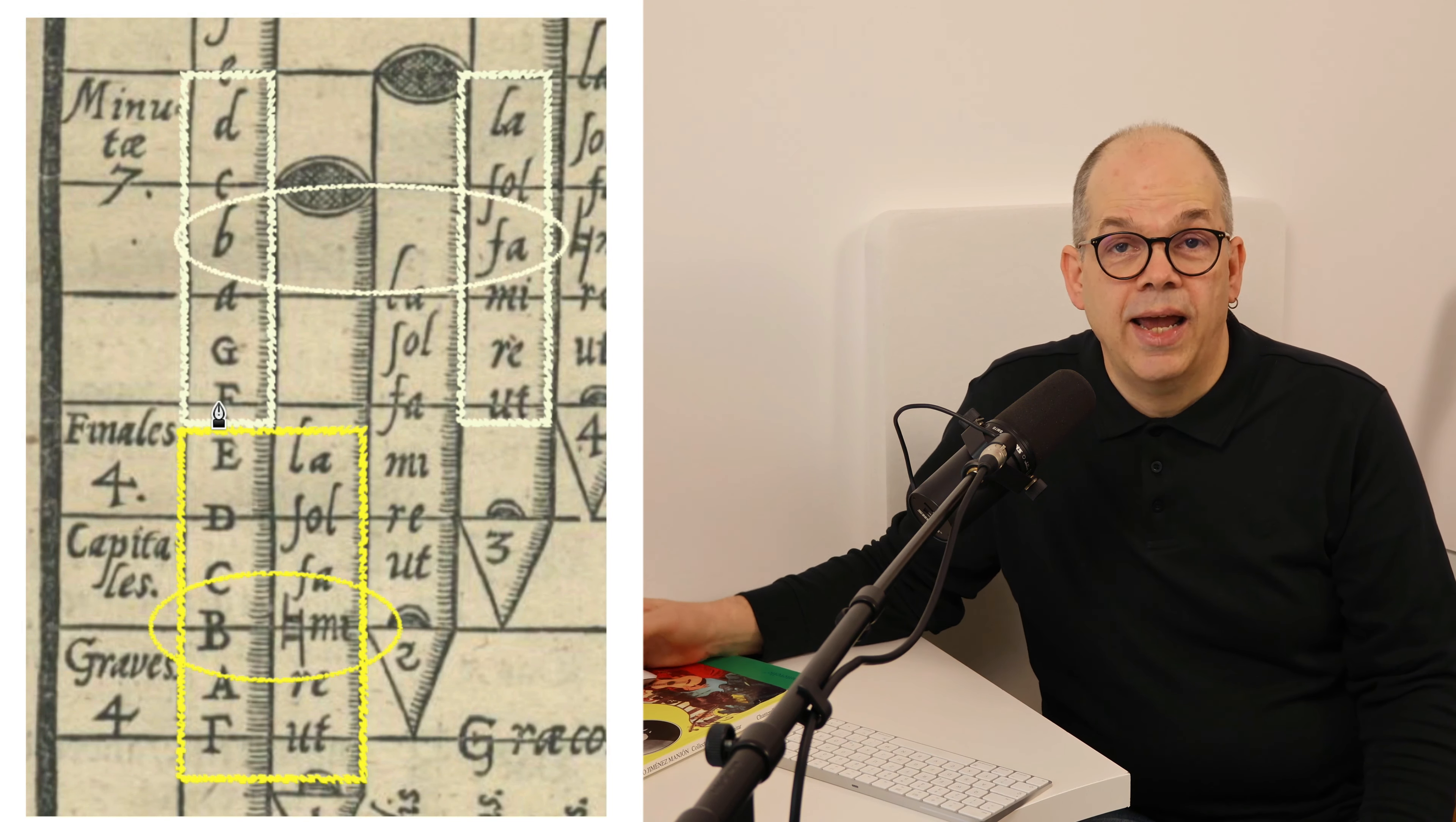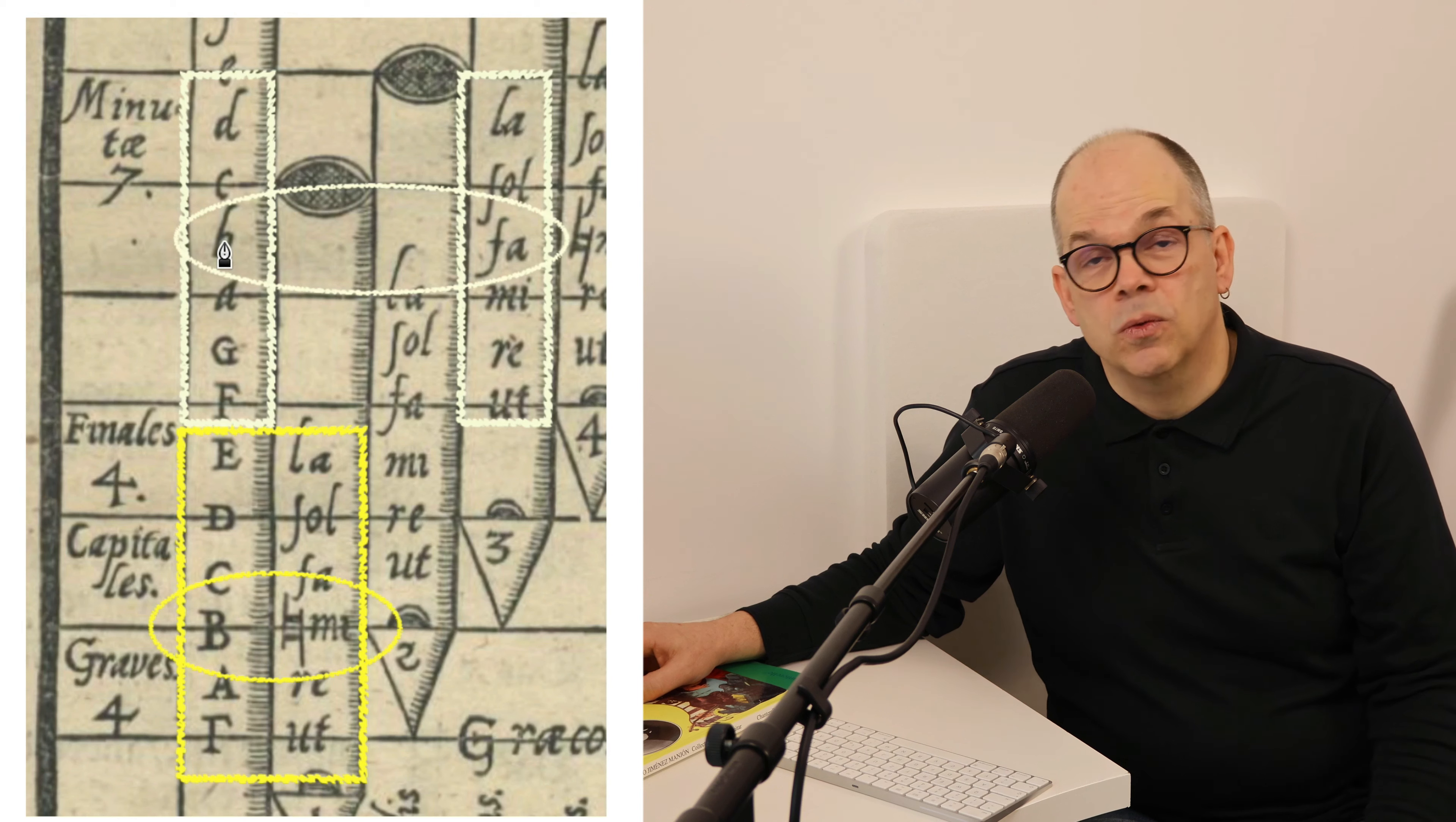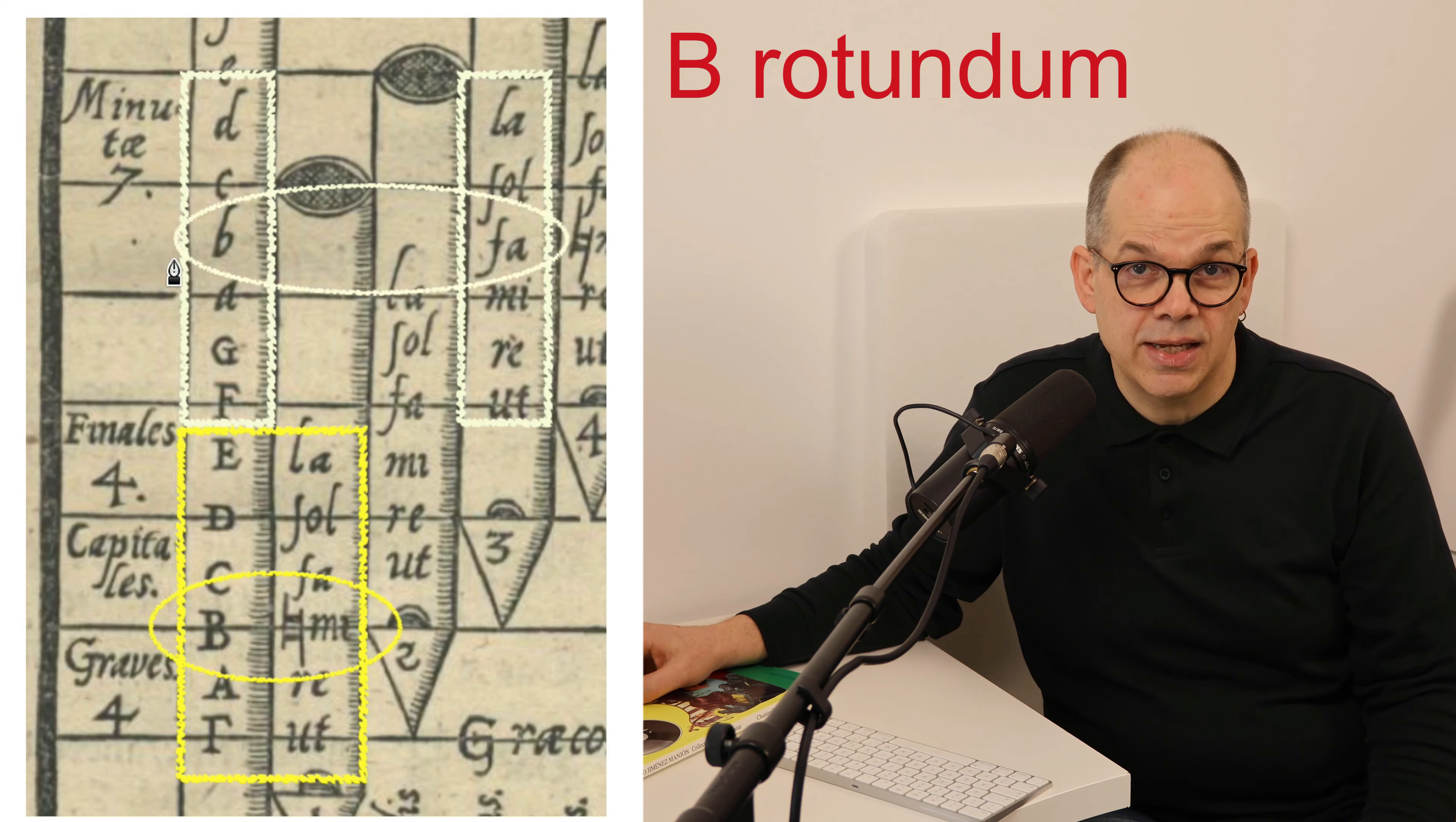Up here you see the hexachord on F, which is F, G, A, B, C, D. And this B is what we now call the B flat, but actually it was the round B, B rotundum,